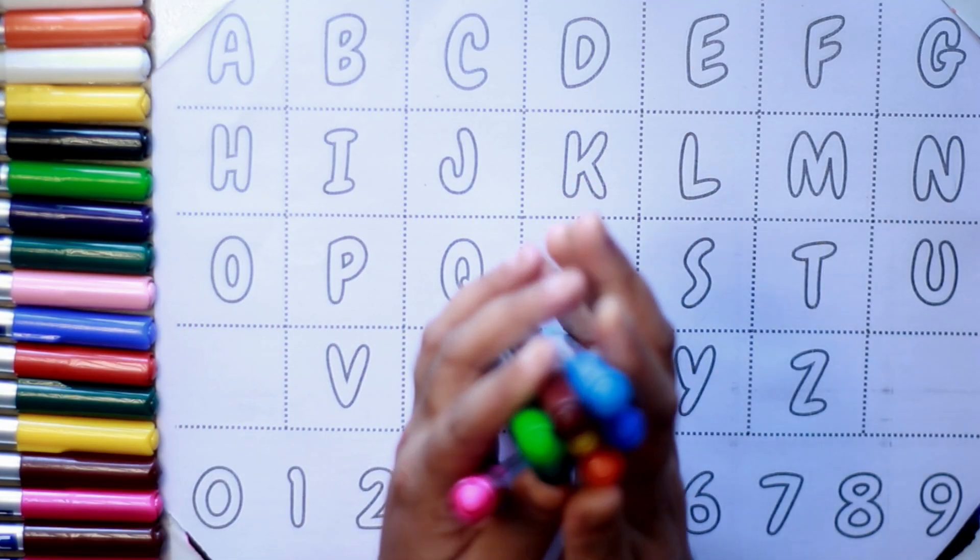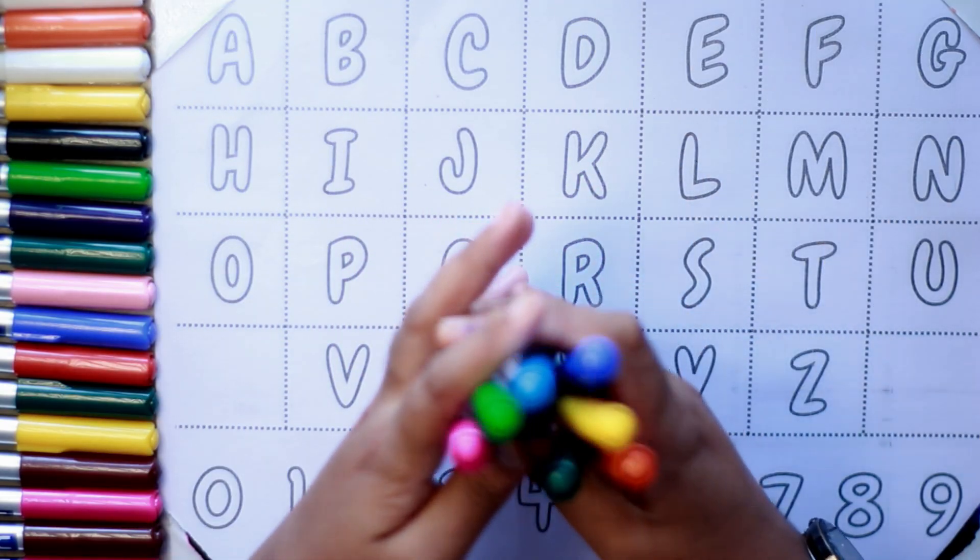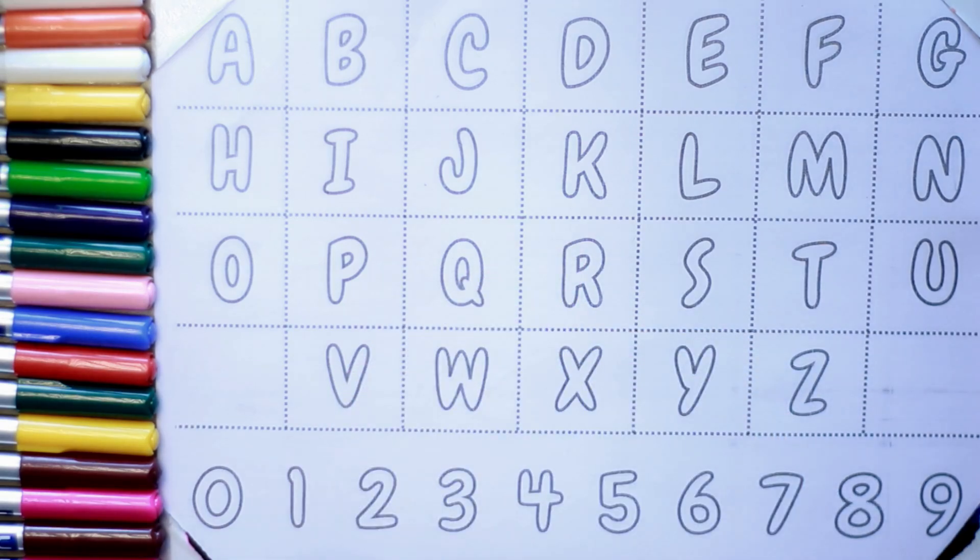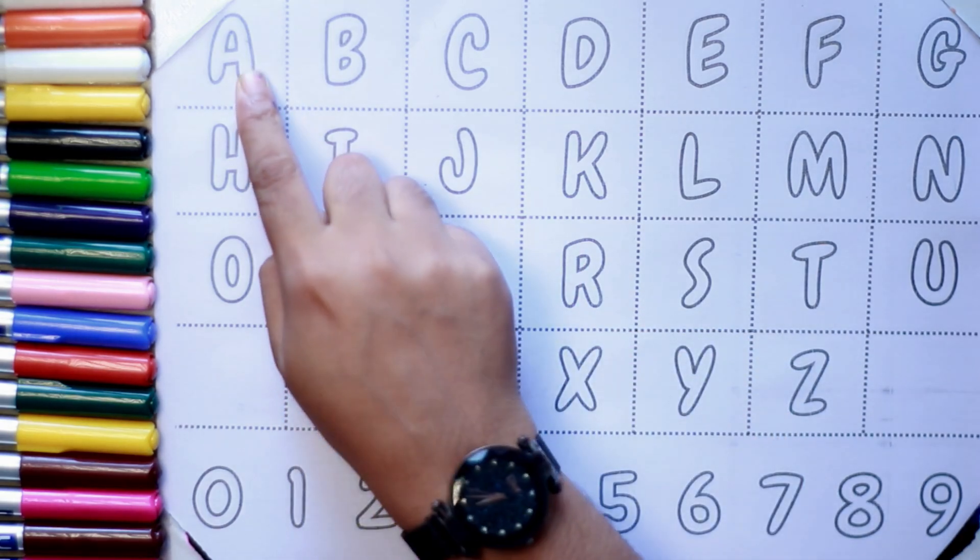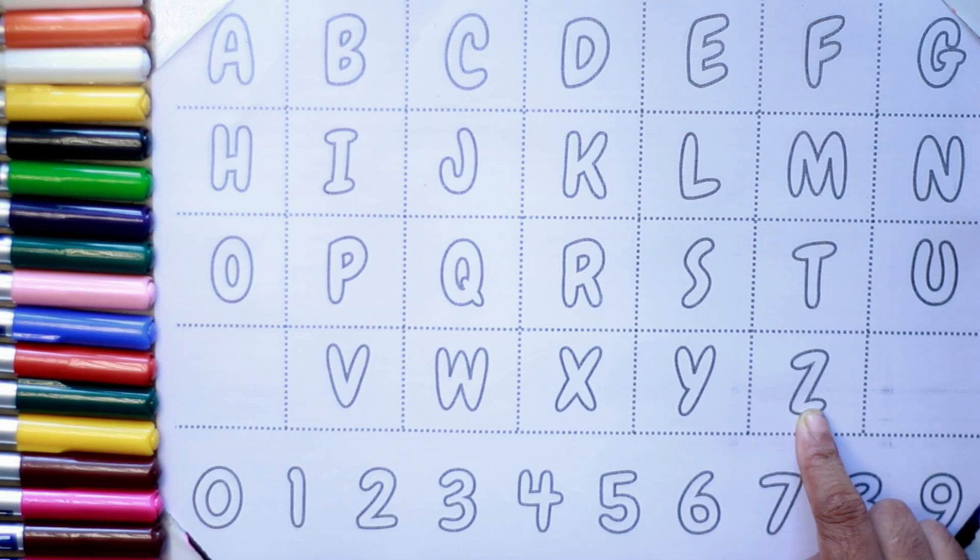Hello kids, welcome to another new video. Today we will learn English alphabet from A to Z and counting number 0 to 9 with your favorite YouTube kids channel.